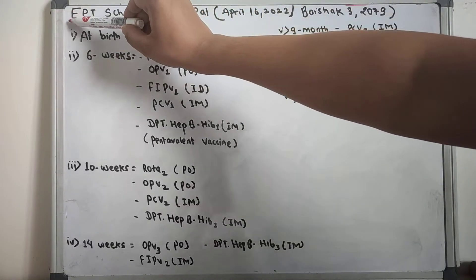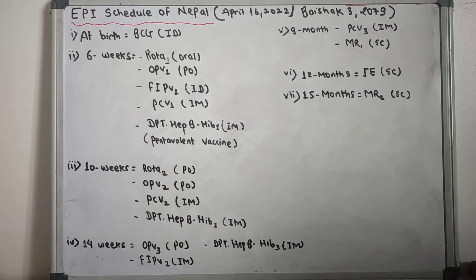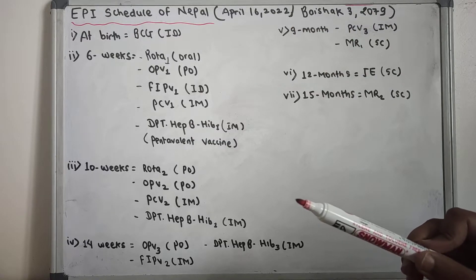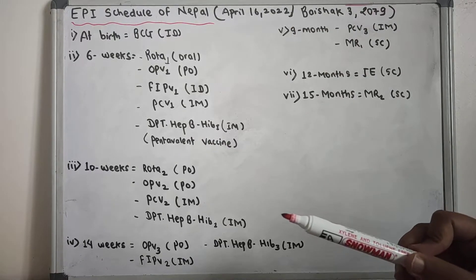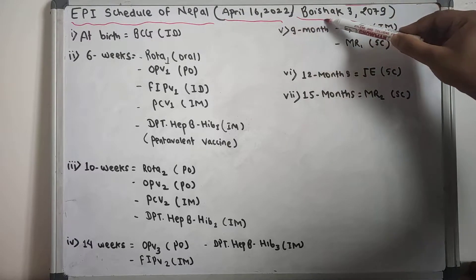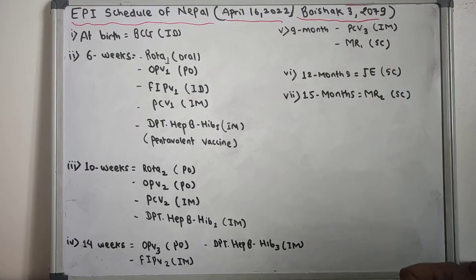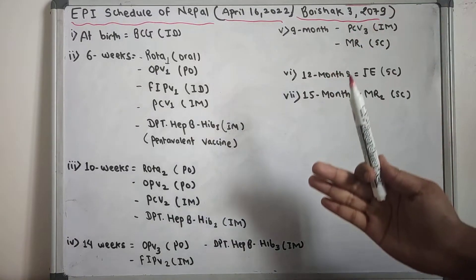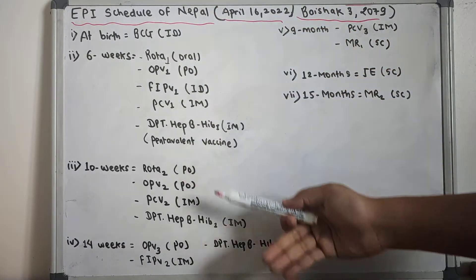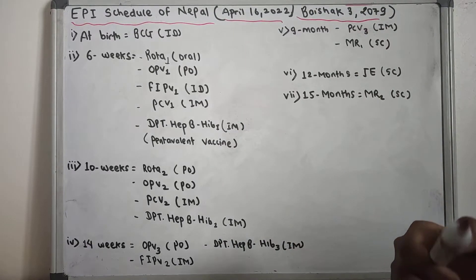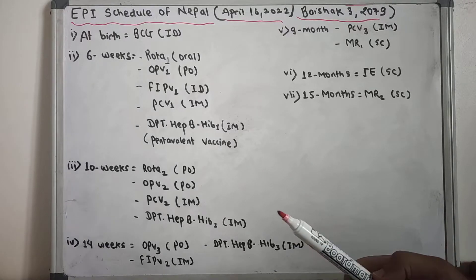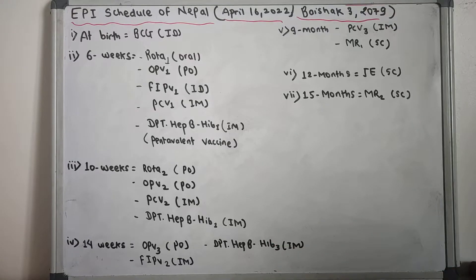In this video, we are going to talk about the EPI schedule of Nepal — the Extended Program on Immunization. This covers the EPI schedule as of April 16, 2022 (Vaisakh 3, 2079). Note that in following years it may change, as it has changed in past years. We will discuss the EPI schedule of Nepal which is currently functioning.